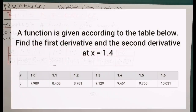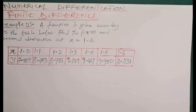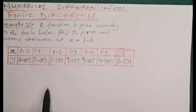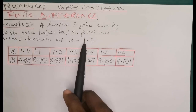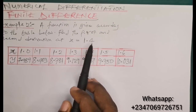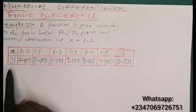In this video, the question says a function is given according to the table below — find the first and second derivatives at x equals 1.4. So we are given a table and have to find the first and second derivatives when x is equal to 1.4.